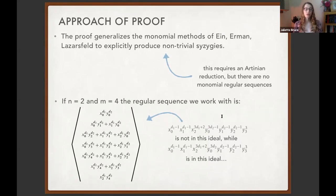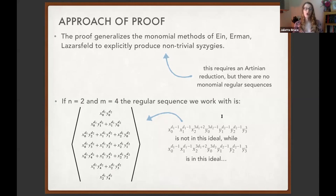The approach to proving this is to generalize the monomial methods of Ein, Ermann, and Lazarsfeld — methods actually first thought about at a previous WAGS meeting — to explicitly produce non-trivial syzygies. The idea is to compute an element in the Koszul cohomology and use very explicit monomial methods to write down something non-zero in that cohomology group. This relies on doing a nice Artinian reduction: Ein, Ermann, and Lazarsfeld could quotient by a monomial regular sequence (powers of variables) to work in the Artinian setting and explicitly produce a non-zero syzygy.